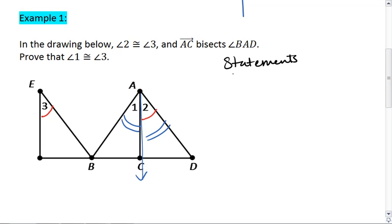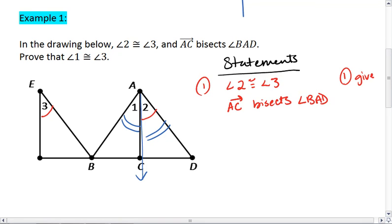Let's start with statements. We know that angle 2 is congruent to angle 3. We also know that ray AC bisects angle BAD. Now because these are both givens, I'm going to let both of them be statement 1, that way I don't have to write the reason 'given' twice. You are more than welcome to do that.